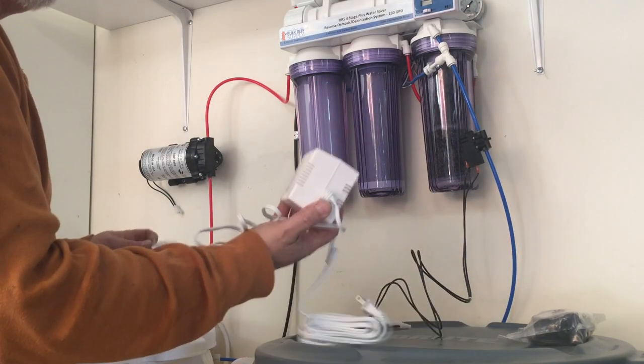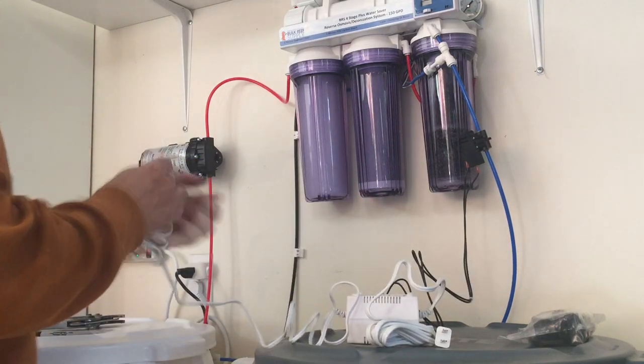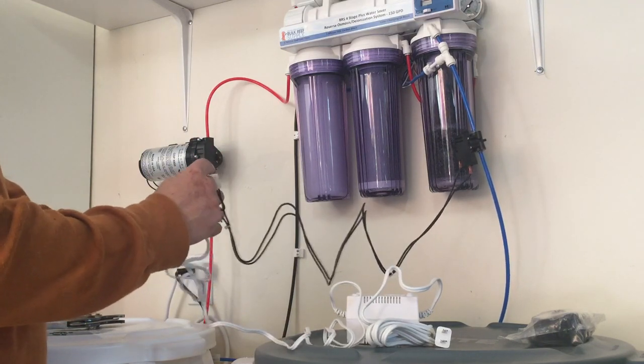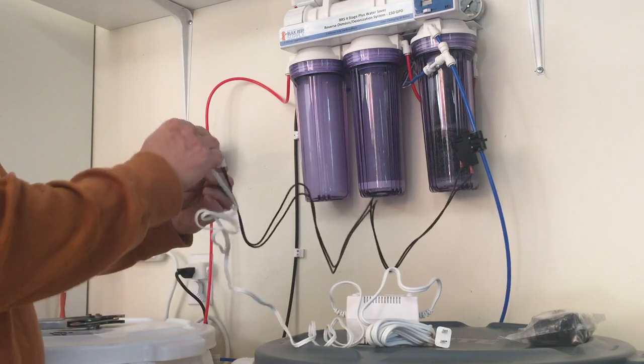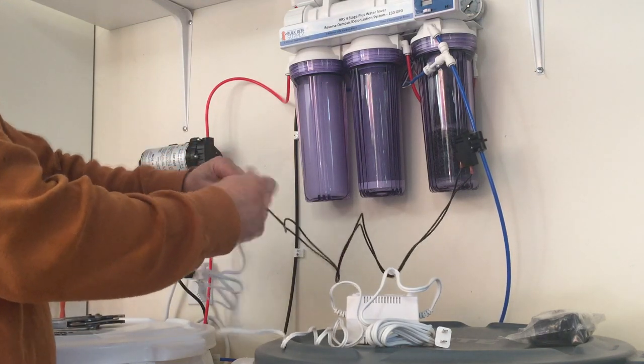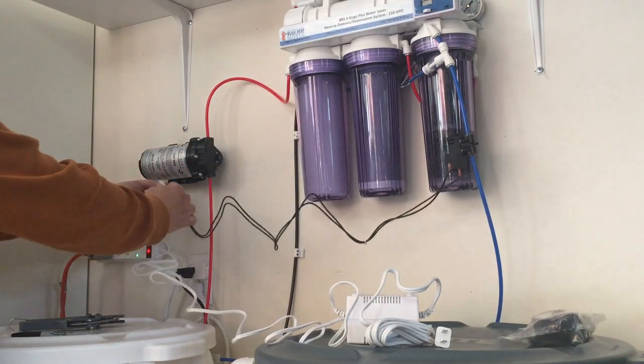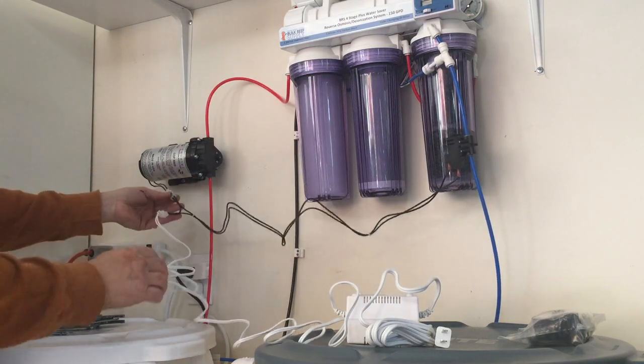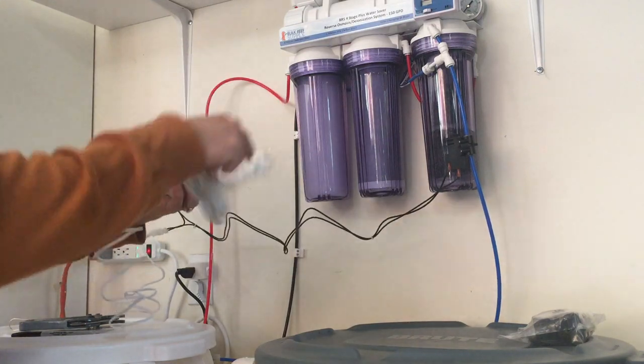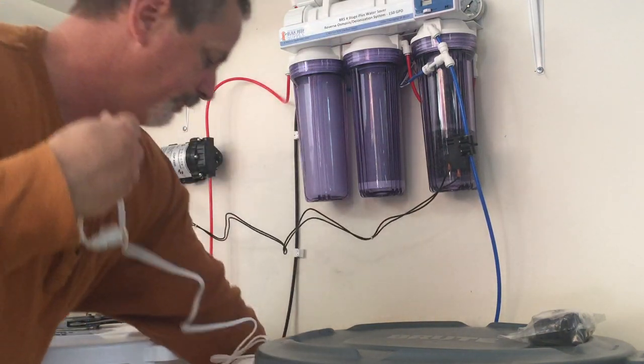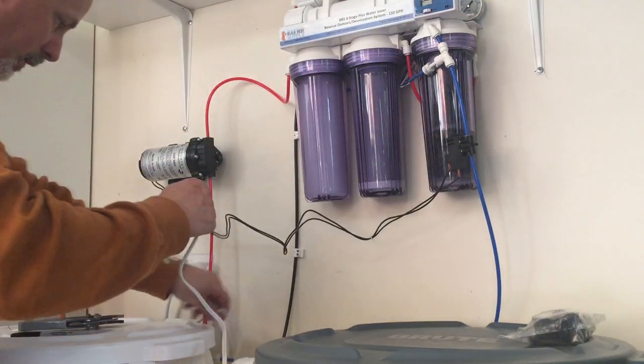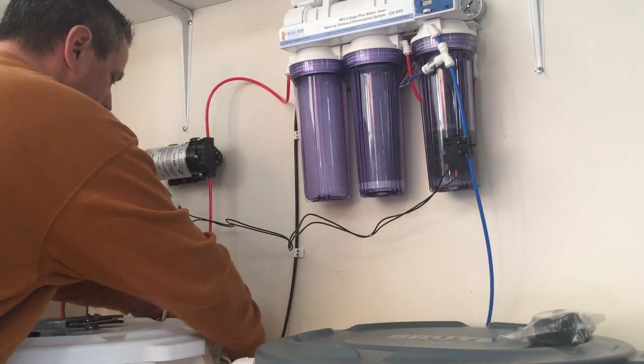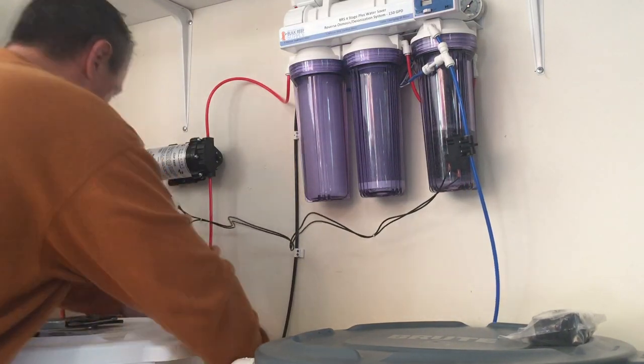This is the power supply for the pump. This is the pressure switch. These plug in. There's male and female, with a little notch there. This will plug in here, and the other one plugs in to the pump. Same thing, except opposite. So you can't make a mistake. I'm going to set this. There's a lot of cord here. I'll plug this in.